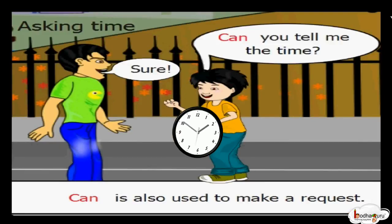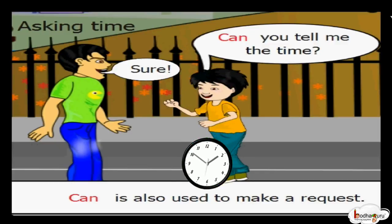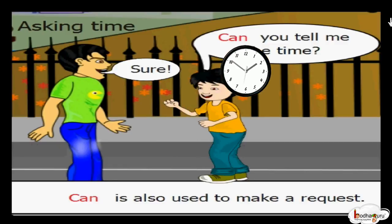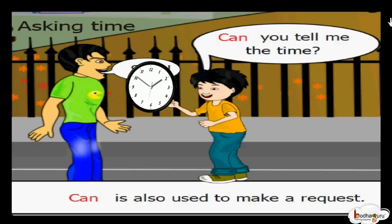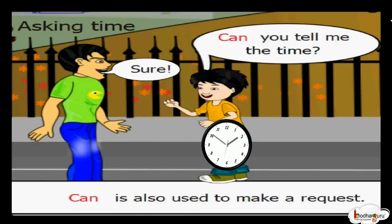'Can' is used for asking the time or directions. The boy needs to know the time, so he asks a man: 'Can you tell me the time?' The man says sure and then tells him the time. If you don't know the way to the station, you can ask someone: 'Can you tell me the way to the station?' 'Can' is very useful.